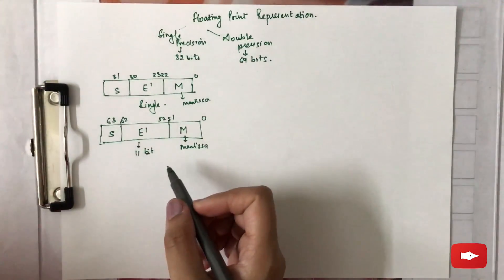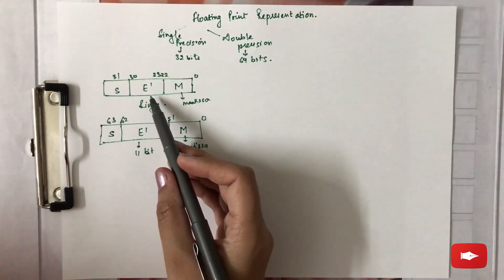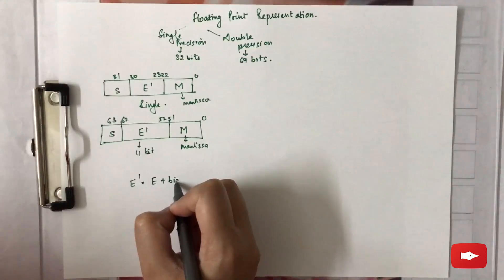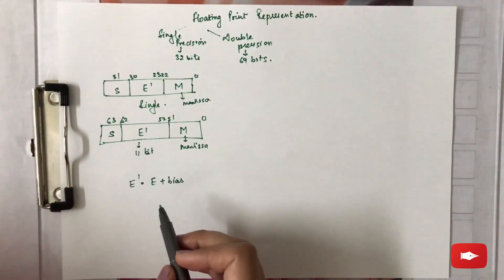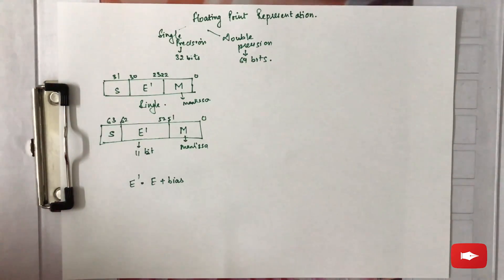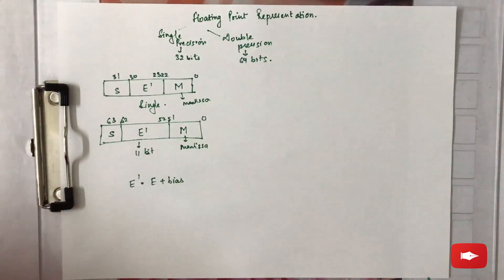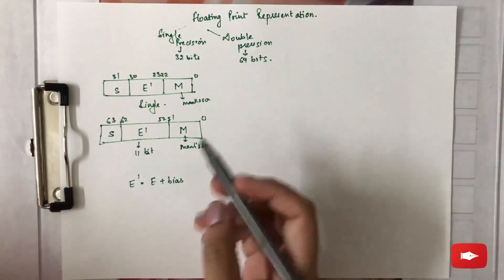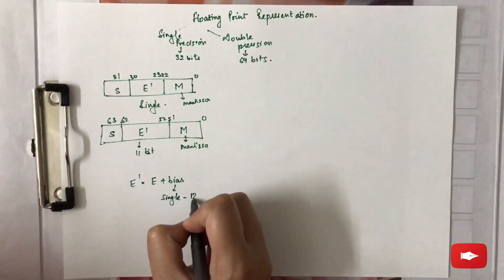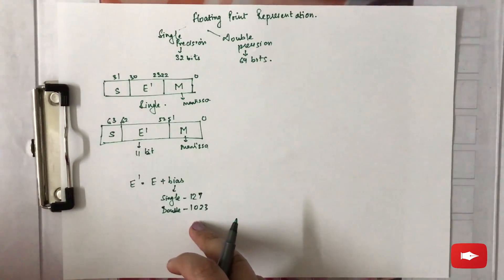Instead of a normal exponent e, we represent the exponent part with e-dash. This is because an exponent can be signed, so instead of storing the exponent with a sign, we store the exponent field as e-dash, where e-dash equals e plus a bias. For single precision, the bias added is 127, whereas for double precision the bias added is 1023.